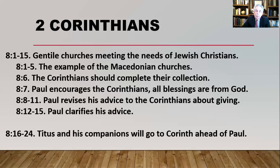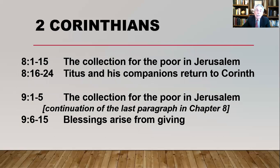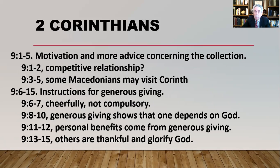The second part of chapter 8 has to do with Titus and his companions going ahead to Corinth. Paul writes from the perspective of the Corinthians once they have received the letter, so the tenses are somewhat unusual, but most translations handle that without difficulty. Paul is telling them why the funds will be administered in a very trustworthy way — he mentions Titus and the two brothers who are going to be traveling with him. That particular paragraph continues into chapter 9, verses 1 through 5, where Paul is still talking about the collection for the poor in Jerusalem.